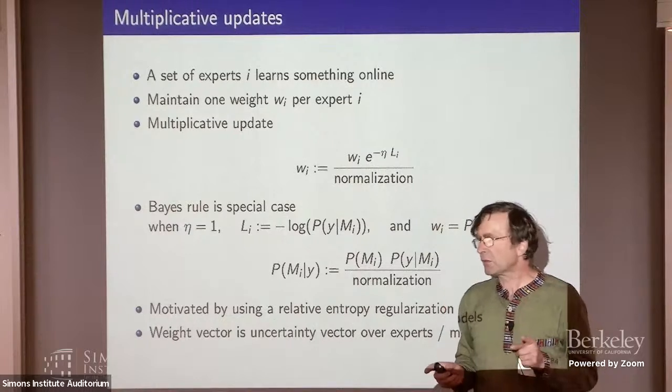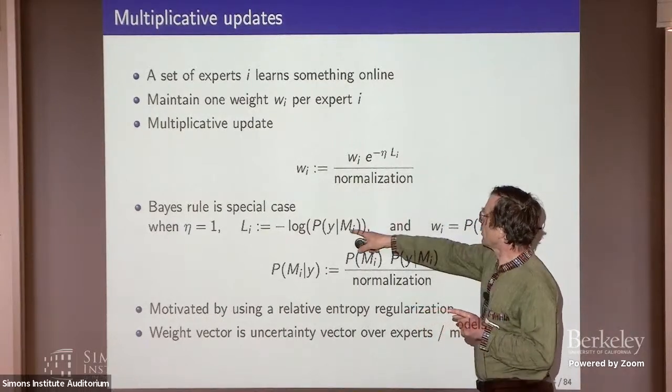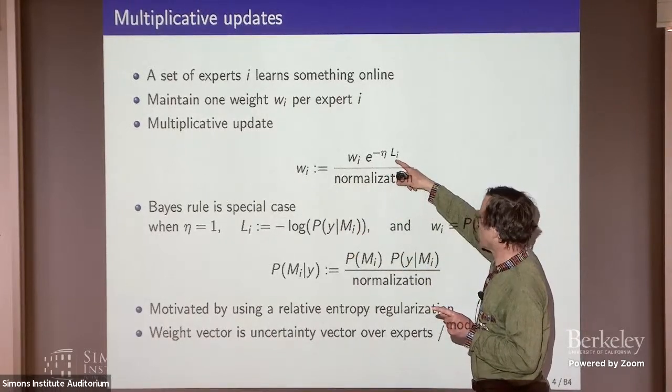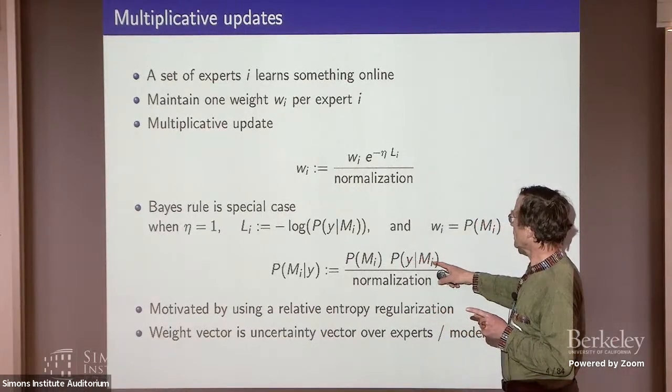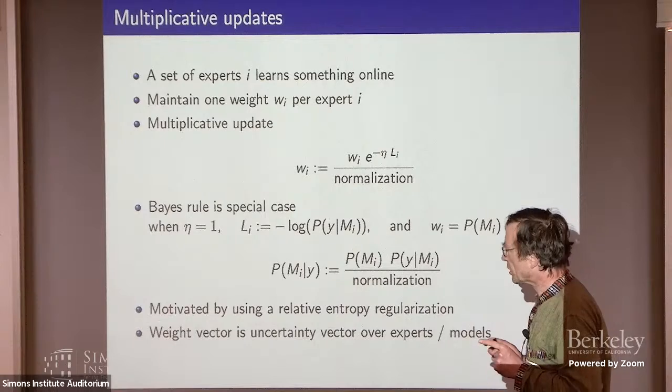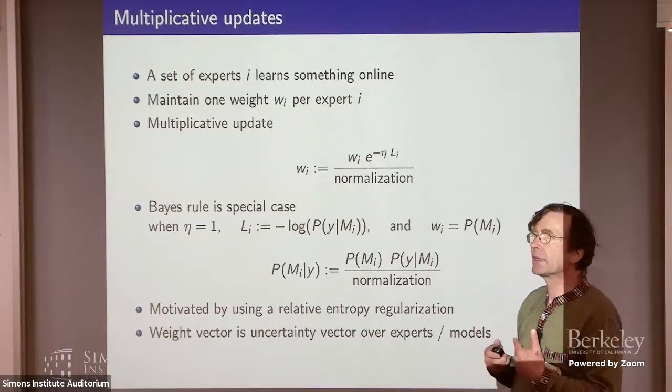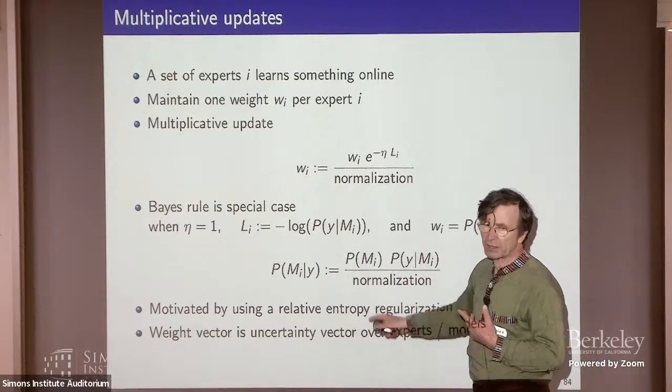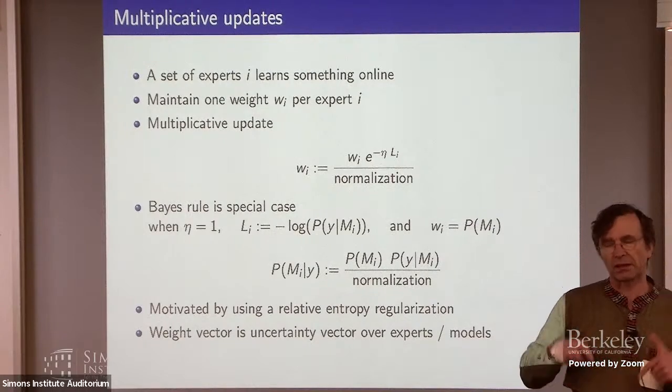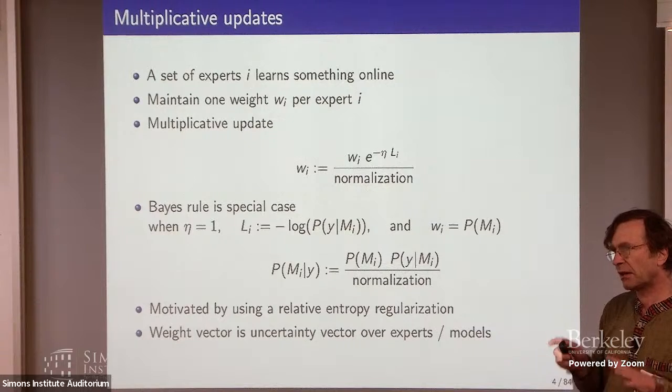So if you're not familiar with this, there's a special case that you are familiar with, which is Bayes rule. Bayes rule happens when you have your loss have minus log, the conditional probabilities, data likelihoods, and eta is one. Then this is pulled down, and it becomes this. And this is the normal Bayes rule. Now, in machine learning, we're very much interested in also how to motivate the update. What's the measure of progress? What's the regularization? And it turns out Bayes rule, the regularization is a relative entropy, or it's based on the max n principle. And I'm going to generalize all that.